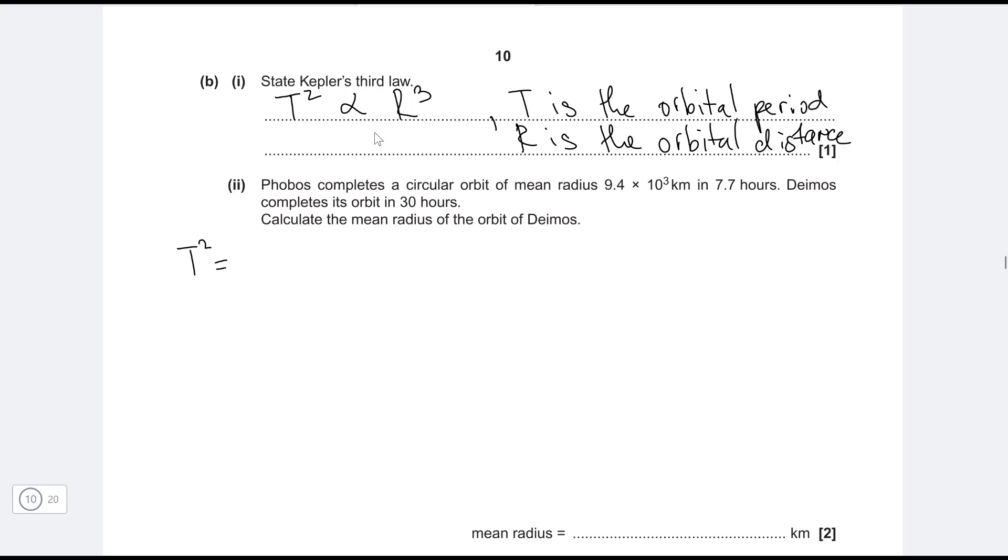Because t squared is proportional to r cubed, we can say that t squared is equal to some constant, let's call it k, multiplied by r cubed. We know what this constant is—this is actually just 4π² over GM. However, let's just say that t squared over r cubed is equal to this constant k, where k is just a constant.